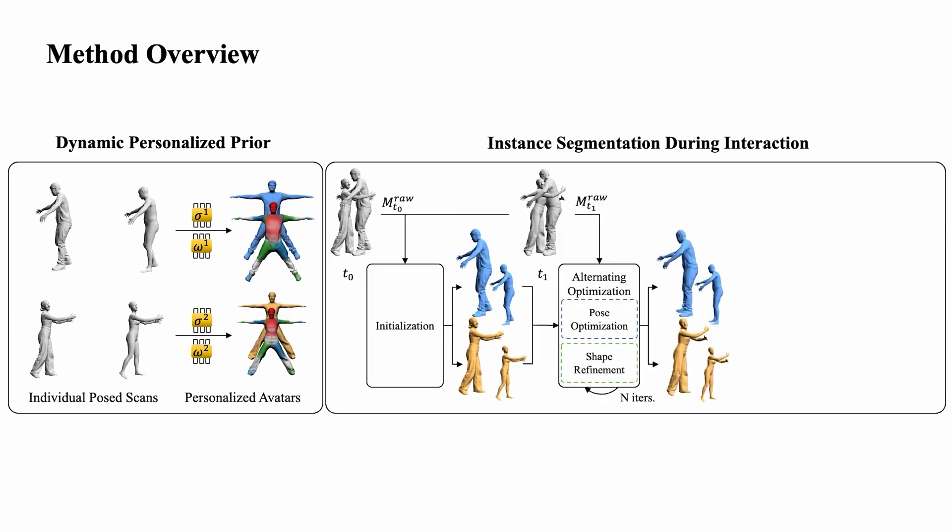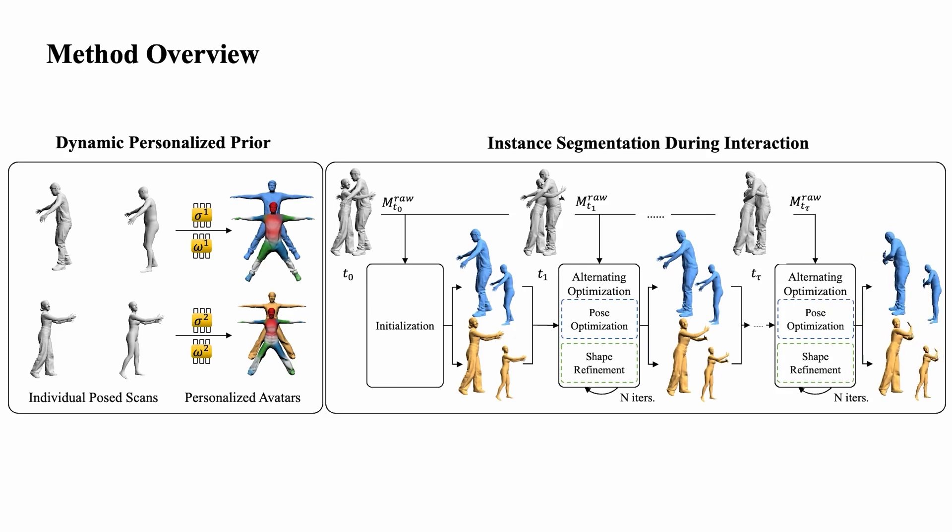In the next frame, where contact happens, we then alternate between fitting the SMPL pose to the scan via a surface energy term, and refining the shape network of the avatar to capture shape deformations that happen during contact. We repeat this for N times and for each frame that has contacts.